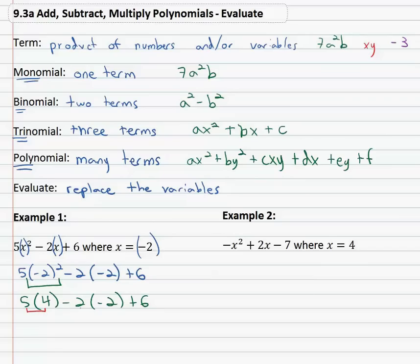Next we multiply, 5 times 4 is 20, negative 2 times negative 2 is positive 4 and we have a positive 6. Simply have to add together what's left and we have 20 plus 4 plus 6 is 30.